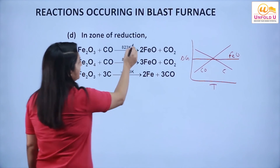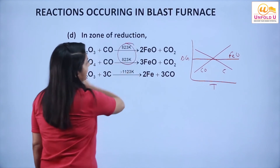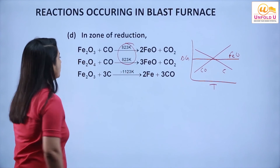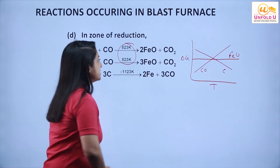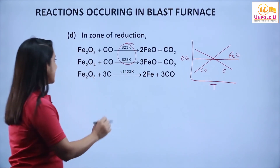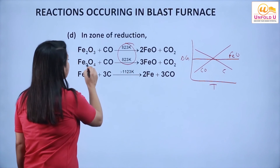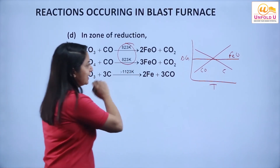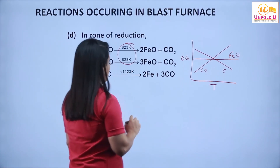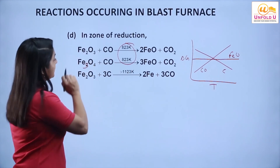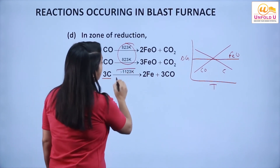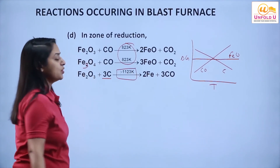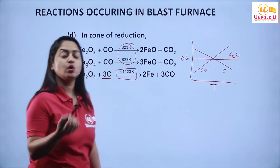At a temperature of 823 K, Fe₂O₃ is reduced by carbon monoxide to FeO, and Fe₃O₄ is also reduced by carbon monoxide to FeO. At higher temperature, carbon is used and you obtain iron metal from iron oxide.